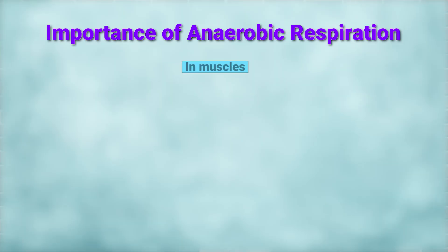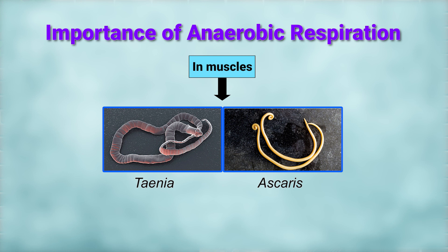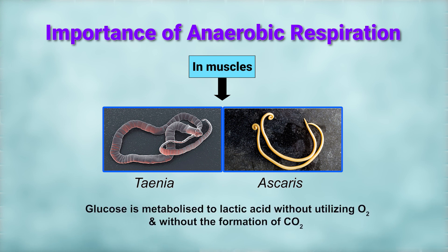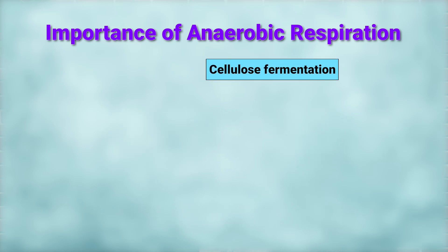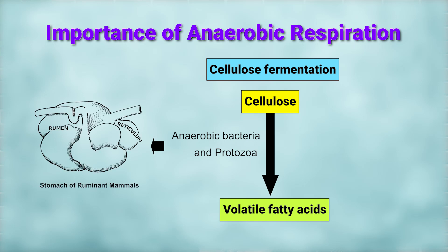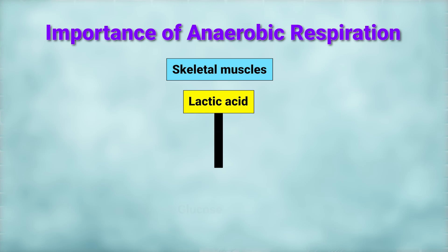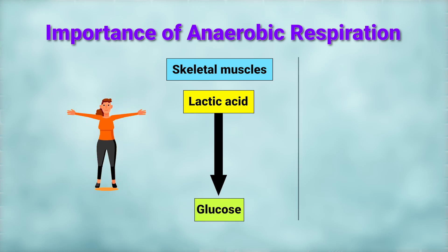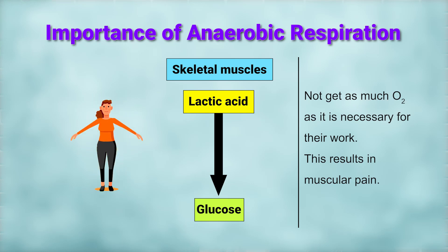The term fermentation is named after the products, like alcoholic fermentation and lactic acid fermentation. For example, yeast oxidizes glucose to ethyl alcohol and carbon dioxide without using oxygen. In muscles, certain bacteria, parasitic worms, Entamoeba, and Ascaris, glucose is metabolized to lactic acid without utilizing oxygen and without the formation of carbon dioxide. In cellulose fermentation, cellulose is converted into volatile fatty acids by anaerobic bacteria and protozoa as found in the rumen and reticulum. In skeletal muscles, lactic acid is produced from glucose during vigorous exercise when they cannot get as much oxygen as is necessary for their work.